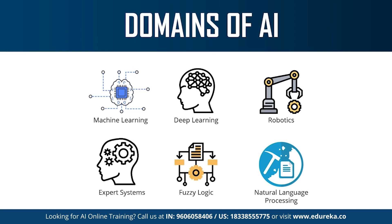Deep learning is the process of implementing neural networks on high dimensional data to gain insights and form solutions. It is the logic behind the face verification algorithm on Facebook, self-driving cars, and virtual assistants like Siri and Alexa. Natural language processing refers to the science of drawing insights from natural human language to communicate with machines and grow businesses. Twitter uses NLP to filter out terroristic language in tweets, and Amazon uses NLP to understand customer reviews and improve user experience.